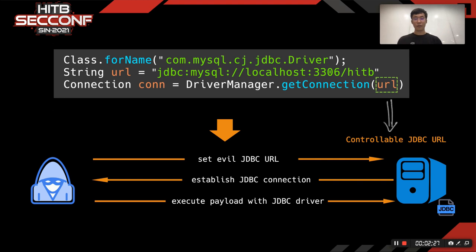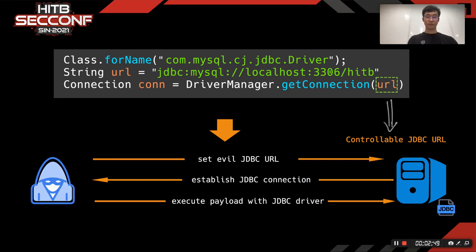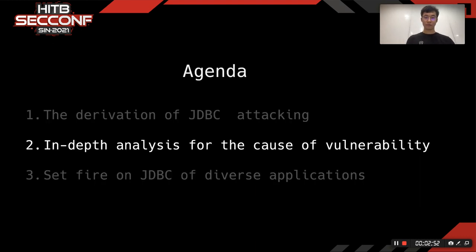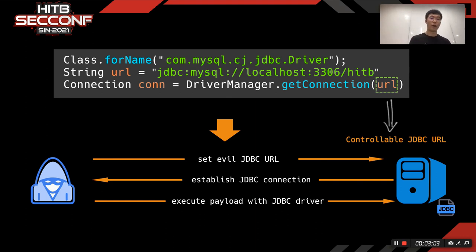Now let's see a typical code for connecting to a database through JDBC. First, it loads a specific driver and then invokes the driver manager connection method to enact a connection to a specific database. Our following discussion assumes that the attacker can control the connection URL. We will discuss some of the attacks in this case.